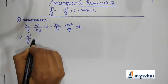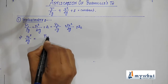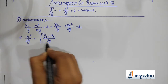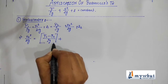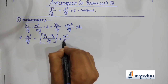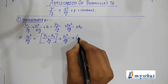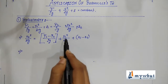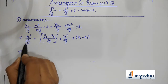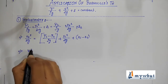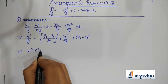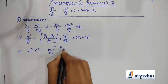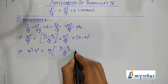This implies that v2 square by 2g is equal to p1 minus p2 by rho g plus v1 square by 2g plus z1 minus z2. Which implies that, bringing v1 square by 2g to the other side and multiplying 2g, we get v2 square minus v1 square is equal to 2g into p1 minus p2 by rho g plus z1 minus z2.